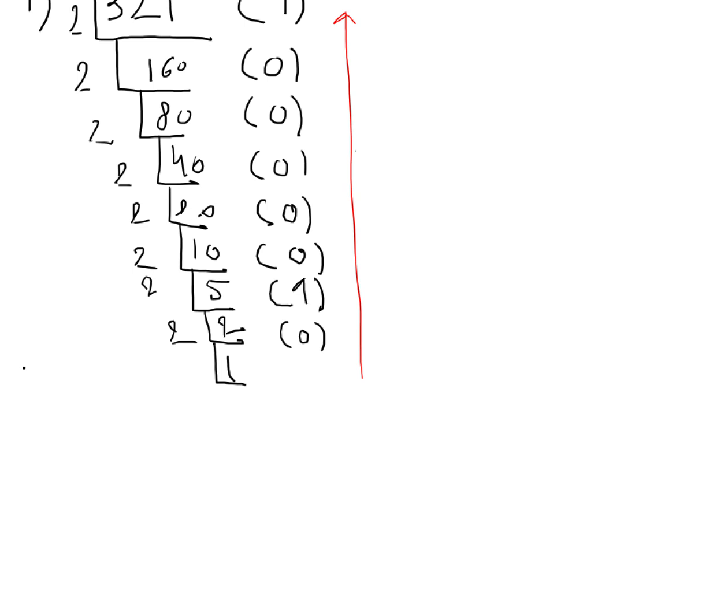...is your answer for this one to be 1, 0, 1, 0, 0, 0, 0, 1. You're going to get a bunch of zeros, 1, 2, 3, 4, 5 total, and you got 1 here. So this is your first part. This is the binary representation of 321.